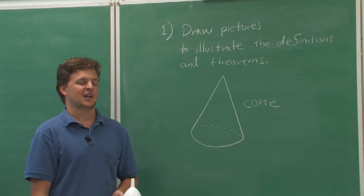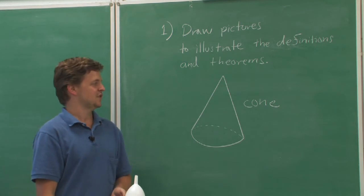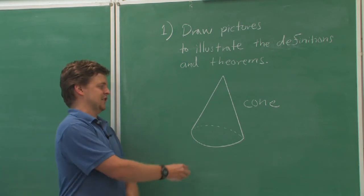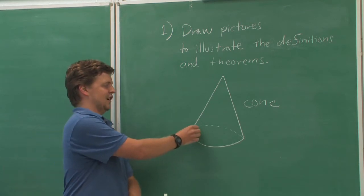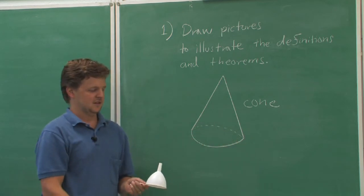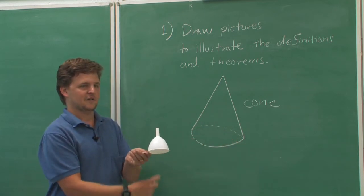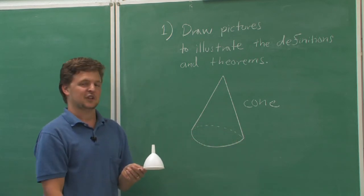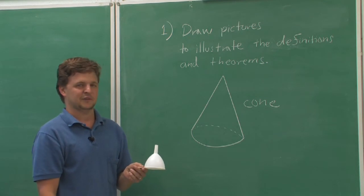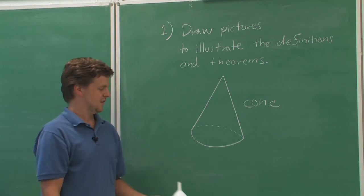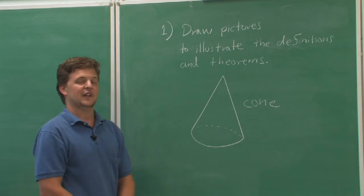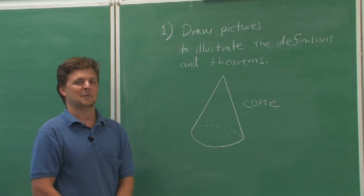The first time a student sees the picture, they may not realize that, for instance, the dotted line represents the backside of the cone's circular base, which is invisible to the viewer from the front. So visual aids are quite helpful as well.